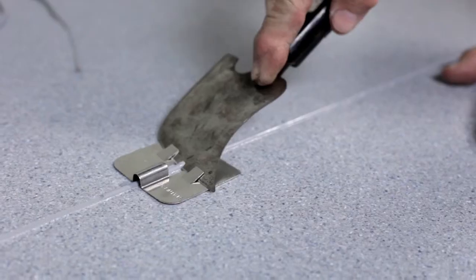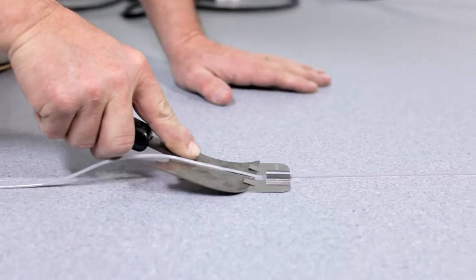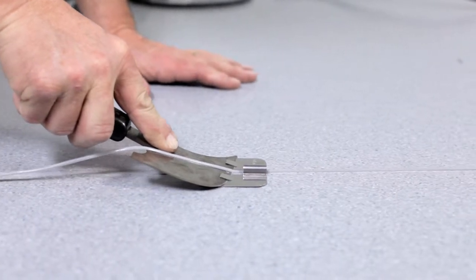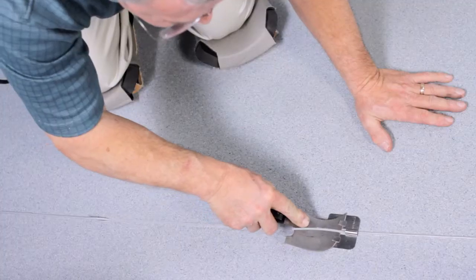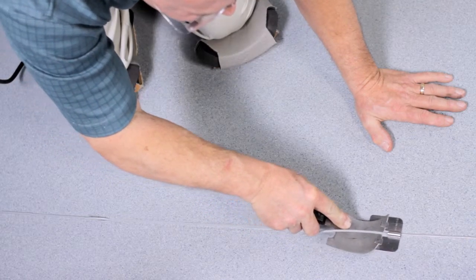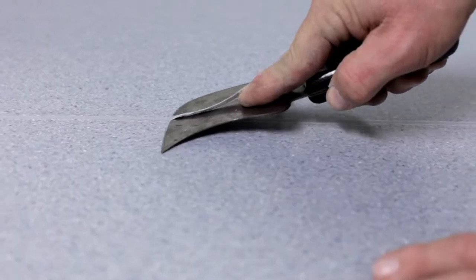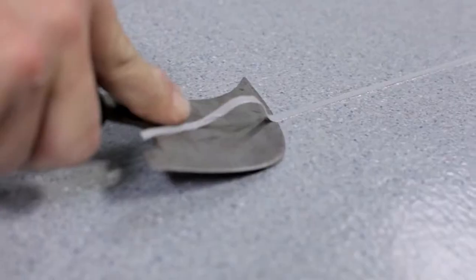The weld rod should be trimmed in two passes when using a spatula knife. While the rod is still warm, skive the first pass using the spatula knife with the trim plate. Once the rod is cooled to room temperature, the rod can be trimmed flush to the edge of the sheet vinyl.